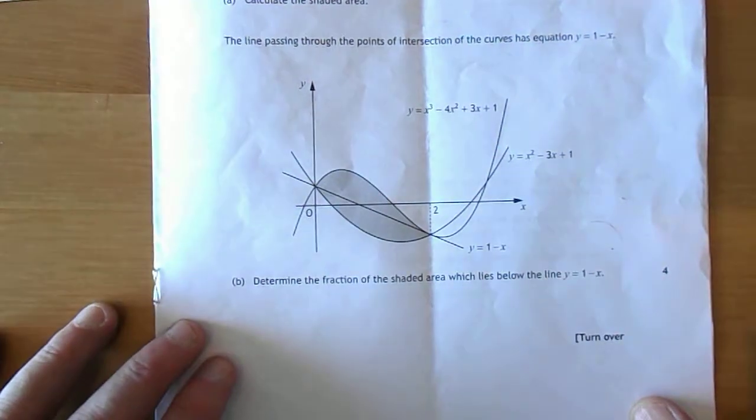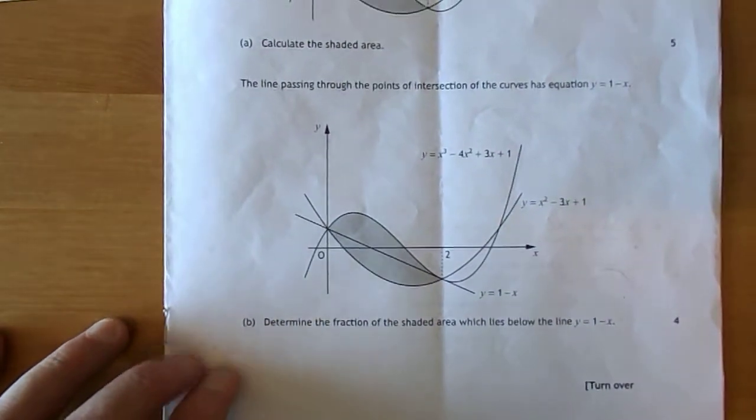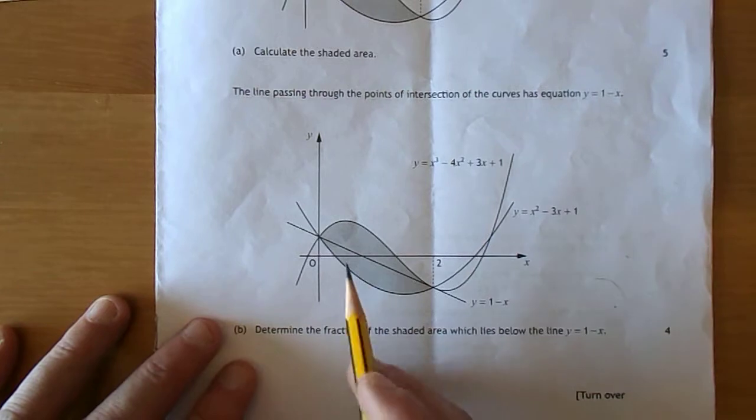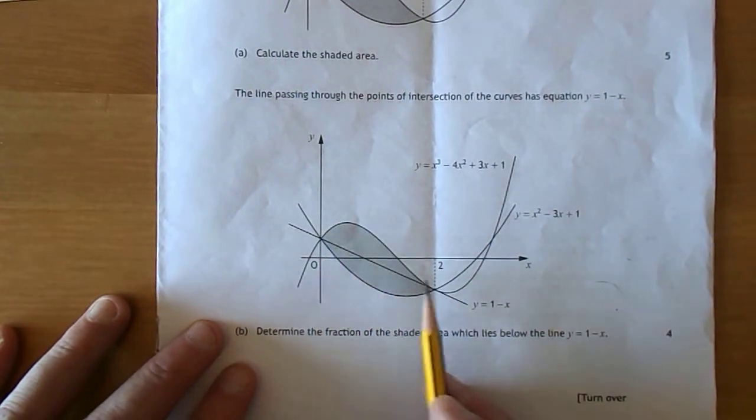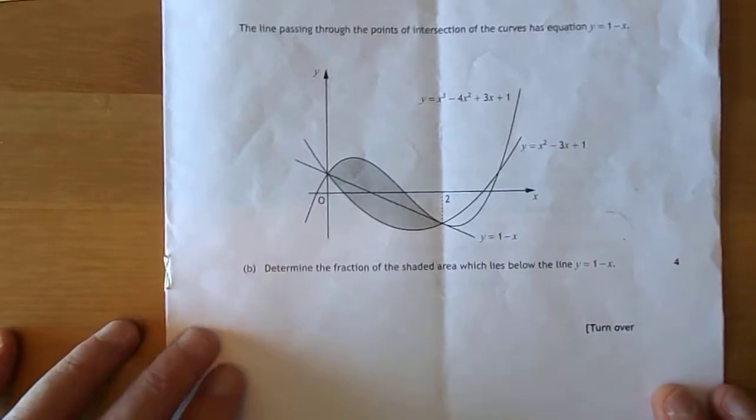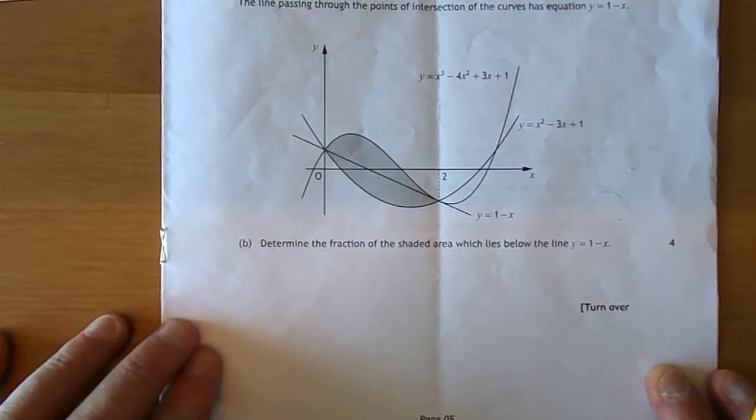Part B. A line passing through the point of intersection of the curves, there and there, has the equation y is 1 take x. Determine the fraction of the shaded area which lies below the line y equals 1 take x.